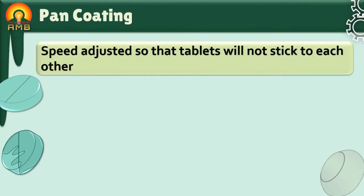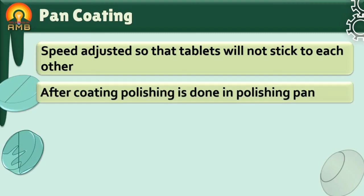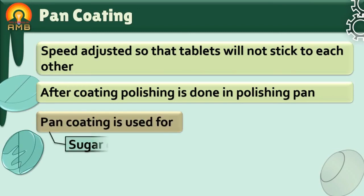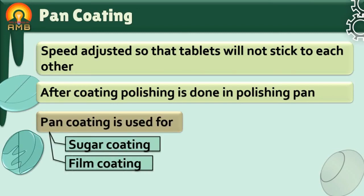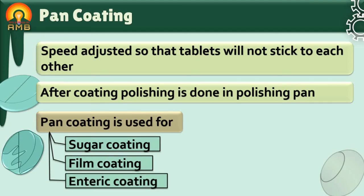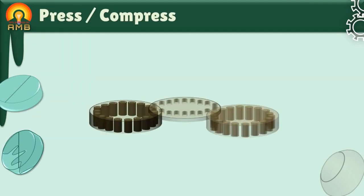After coating, polishing is done in a polishing pan. Pan coating technique is used for sugar coating, film coating, and enteric coating. Next coating method is press coating or compression coating.